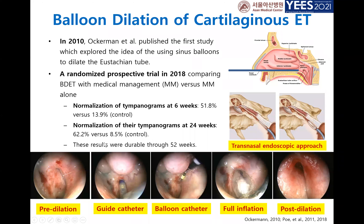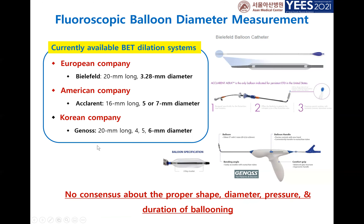Balloon dilation was introduced in 2010 by Ockermann, who published the first study exploring the use of sinus dilation balloons to dilate the e-tube. In 2018, a randomized prospective trial showed that a pretty high percentage — around 52% — demonstrated normalization of the tympanogram at six weeks after balloon dilation, and these results were durable throughout 52 weeks.